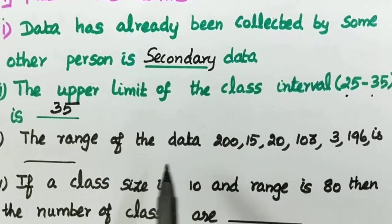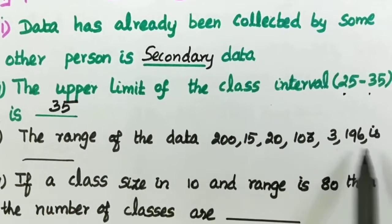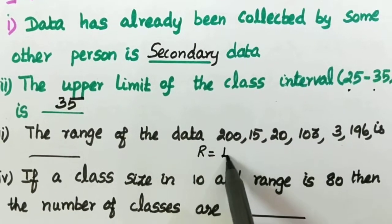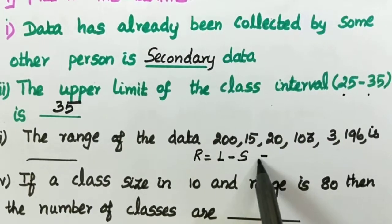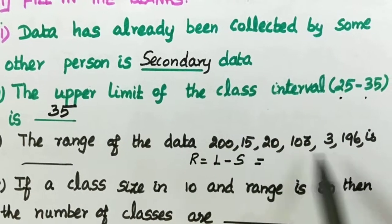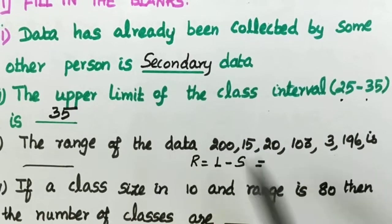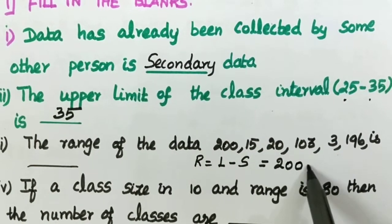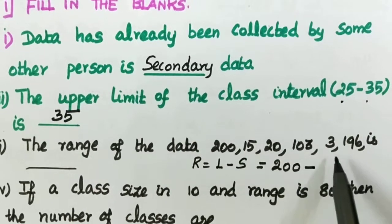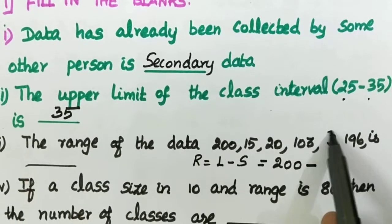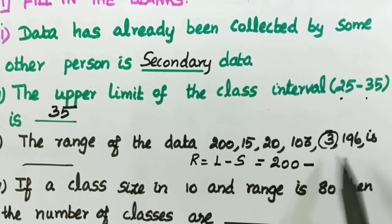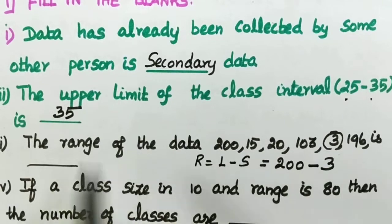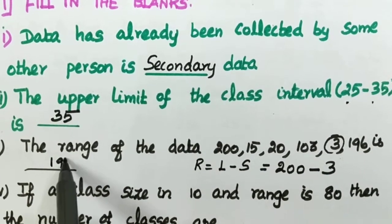The range of the data — we calculate the range, which means the larger value minus the smallest value. The largest value is 200 and the smallest is 3, so 200 minus 3 equals 197.